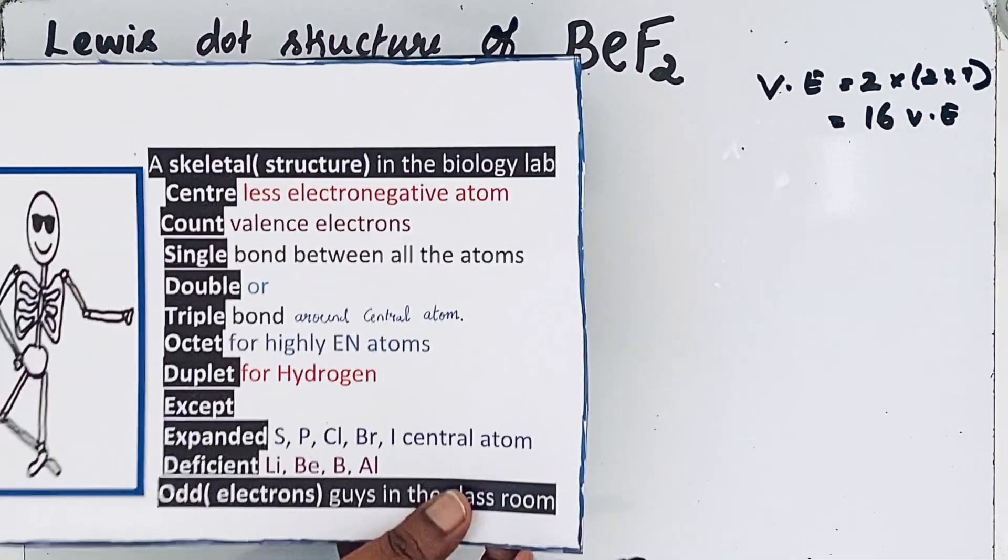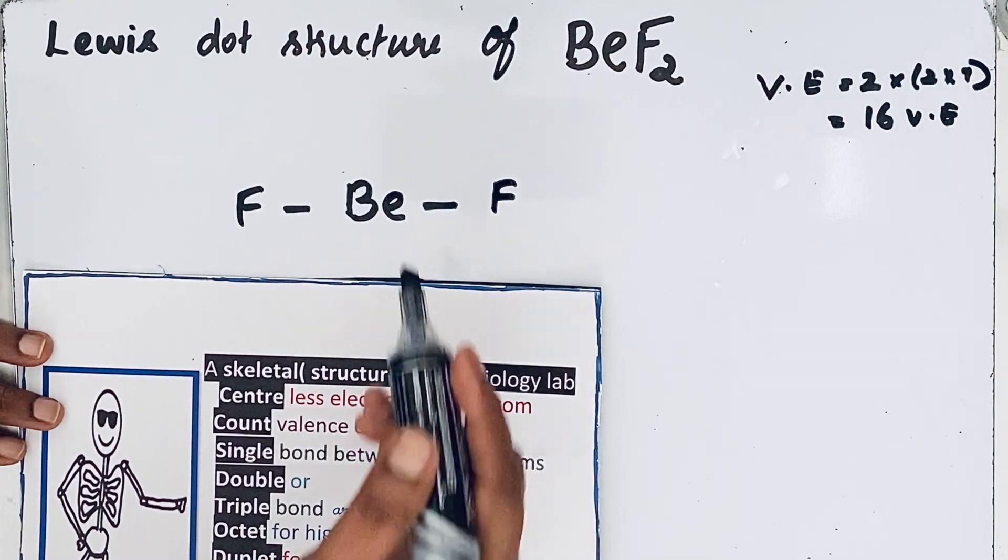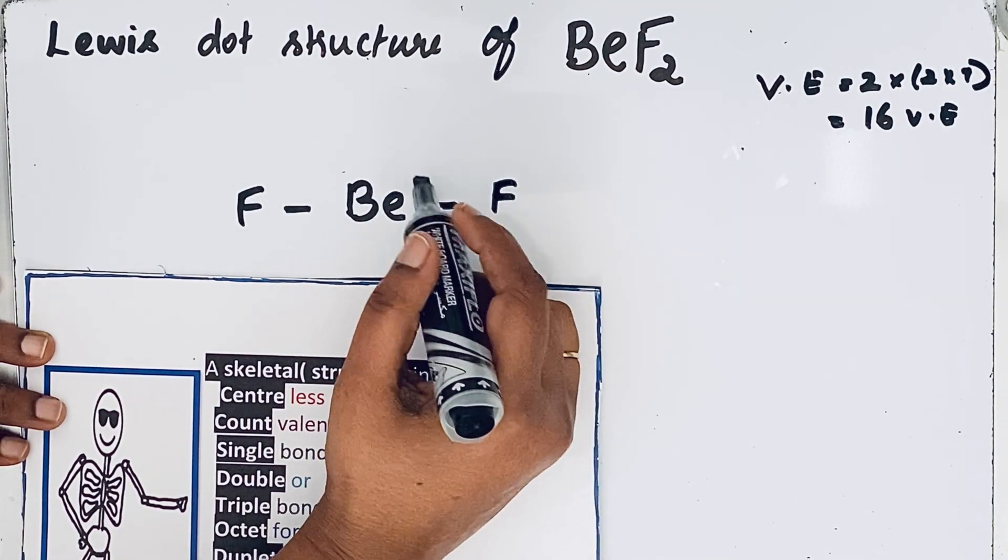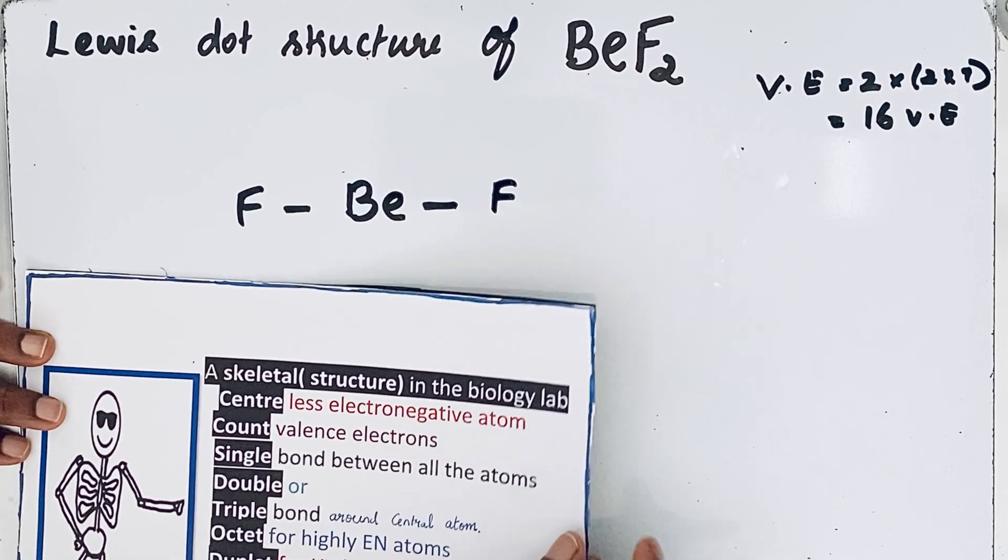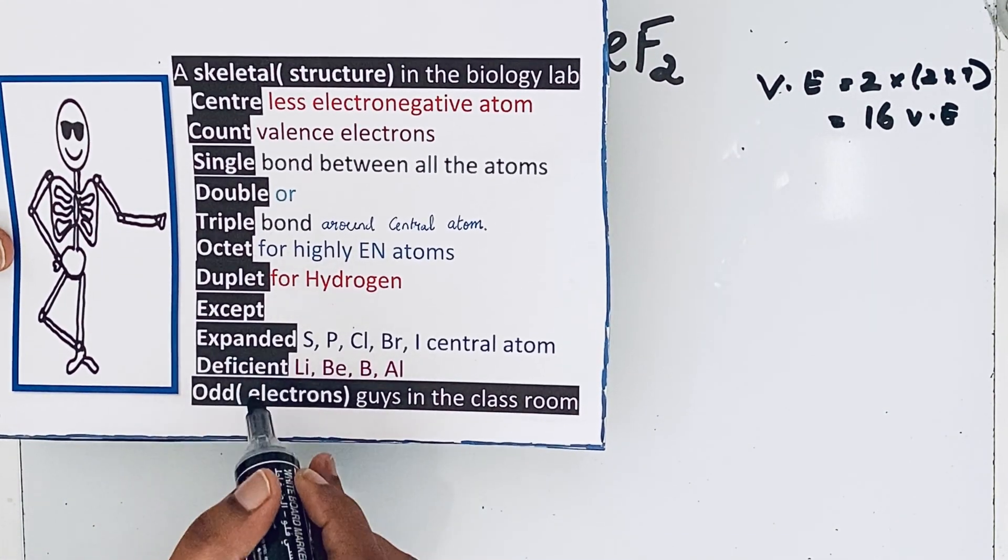Then double or triple bond around central atom. Why do we give that a double or triple bond around central atom means to get octet configuration. This time you have to see that some exceptional cases are there: expanded, deficient, odd electrons.